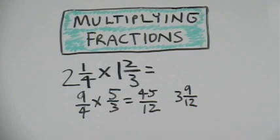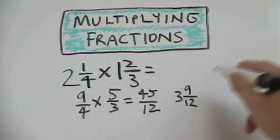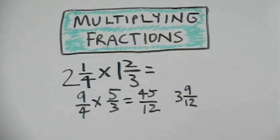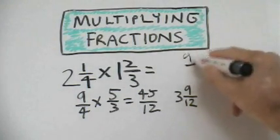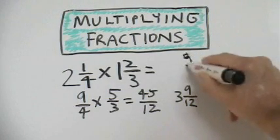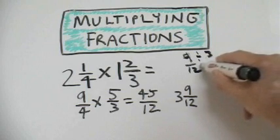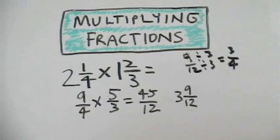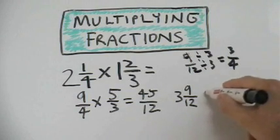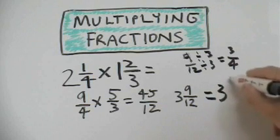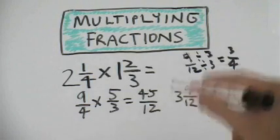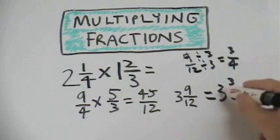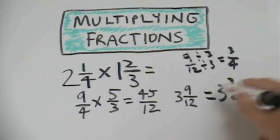Now, hopefully, you've trained your eye to know that we're still not done, because nine-twelfths can be reduced. So let's do that by using the greatest common factor method. In this case, three would be our greatest common factor. So we divide both sides by three and we get three-fourths. Our final answer is three and three-fourths. Make sure you do not forget to put your whole number after you reduce this fraction.